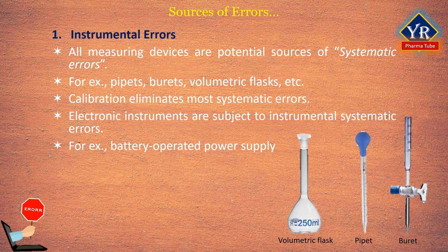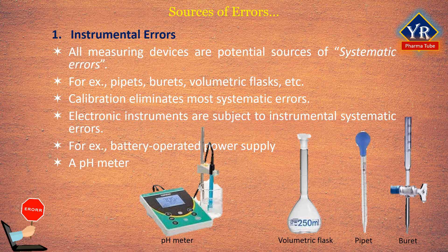The analyst may also use an instrument under conditions in which errors are large. For example, a pH meter used in strongly acidic media is prone to an acid error. Temperature changes cause variation in many electronic components, which can lead to drifts or errors. Some instruments are susceptible to noise induced from AC power lines, and this noise may influence precision and accuracy. In many cases, errors of these types are detectable and correctable.